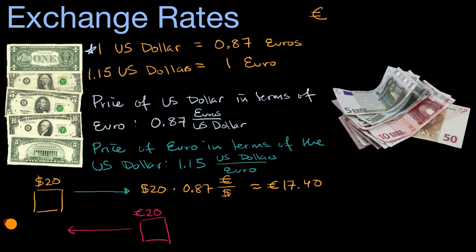Here you would say 20 euro times 1.15 US dollars per euro. What is this going to be? This is going to be 20 times 1.15, which is going to be 23 US dollars.